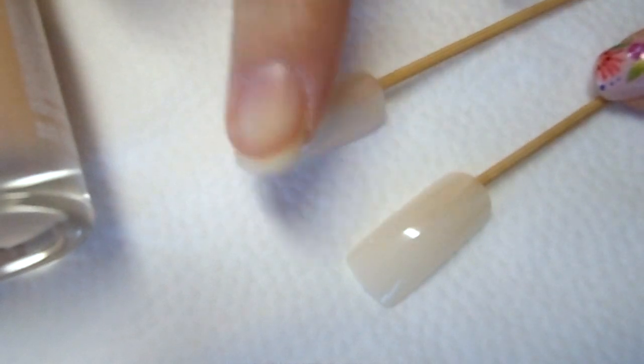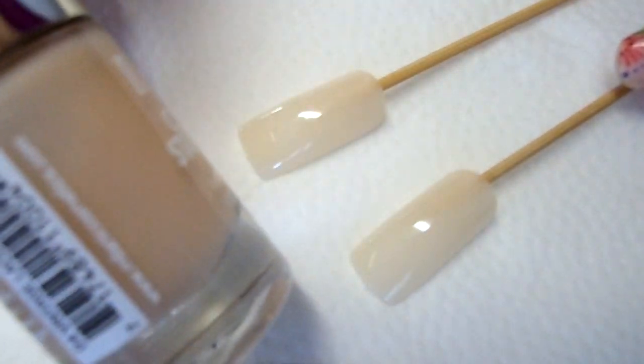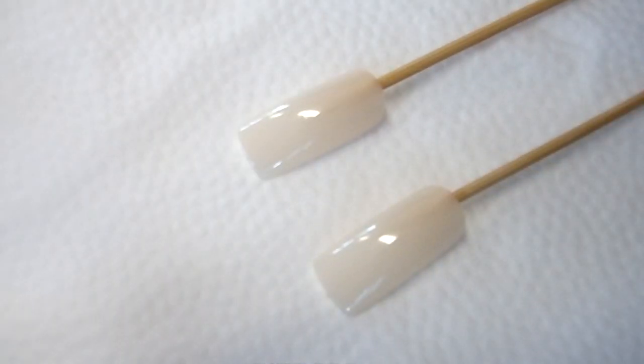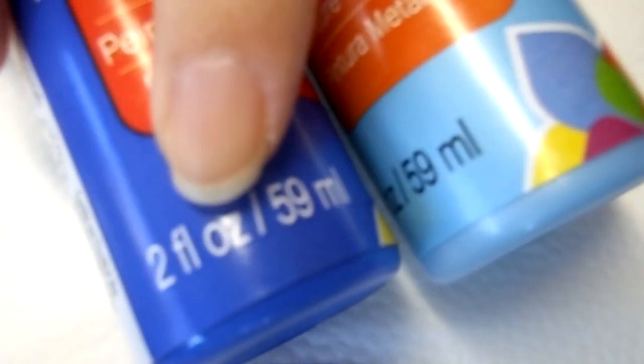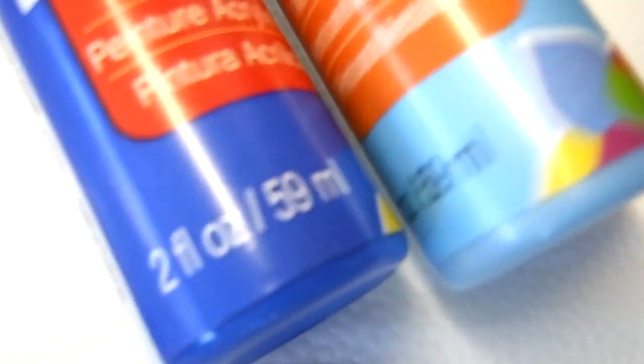For the base you want to use a beige translucent color. Next we will go to our acrylic paint and I am using four different colors: gold, silver, a bright pink, and I mixed my own blue by using a darker blue and a very light blue.